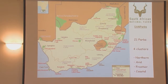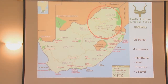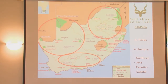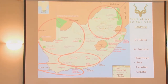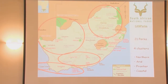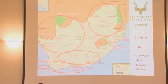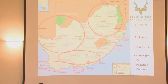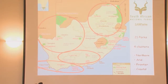We divide our parks into four clusters: the northern cluster, the more arid cluster which includes the most sensitive environments, the frontier cluster, and the coastal cluster. In South African National Parks we have different scientific services offices — the biggest is here in Kruger, with smaller offices in Pemberley, Port Elizabeth, Maisna, and Cape Town. We have scientists based all over the country and need to work together to do monitoring across all the parks.